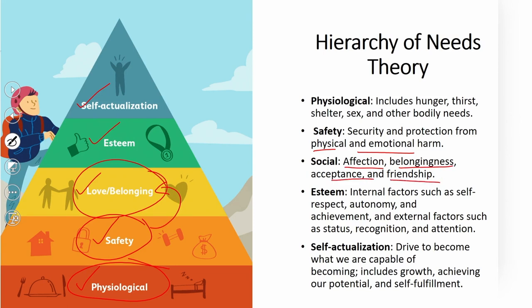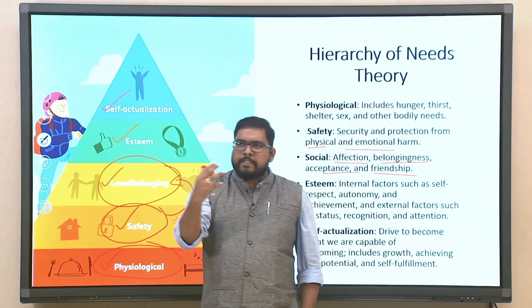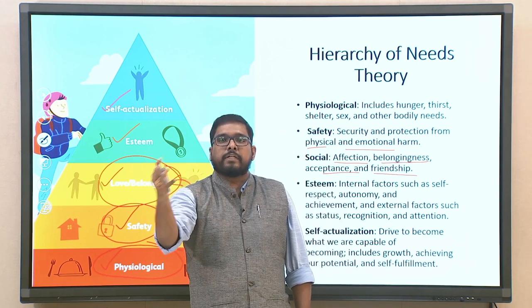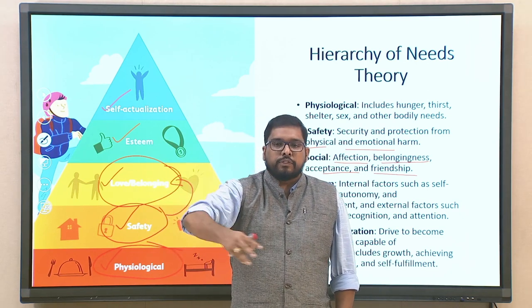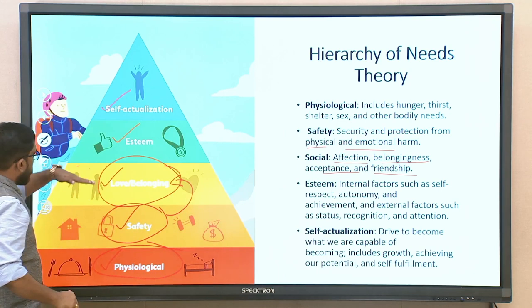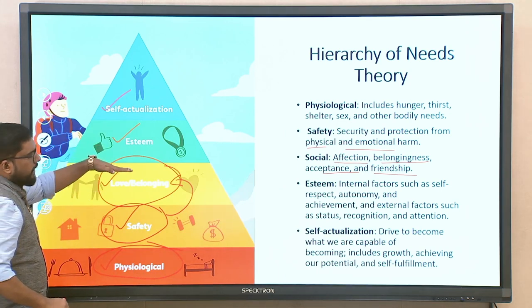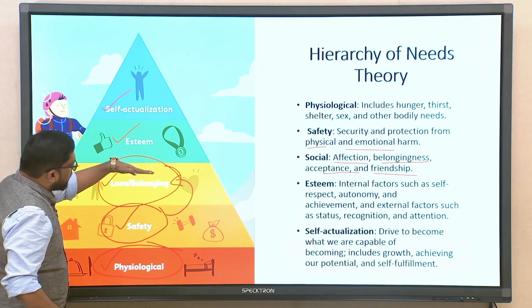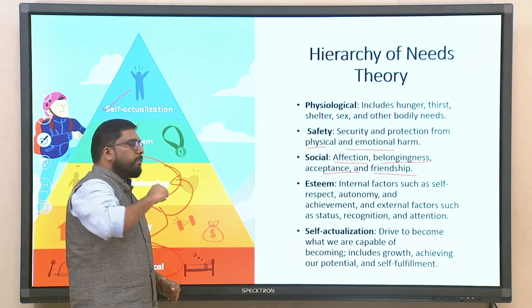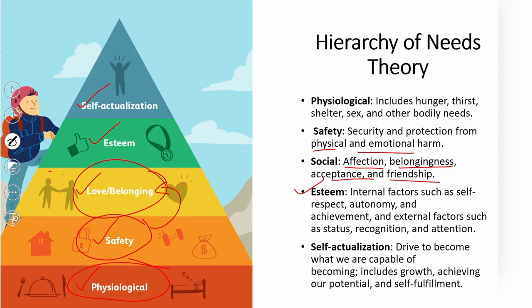Most people tend to reach and stagnate at the social needs level, striving for affection and belongingness — within the organization, the group, the team, the home, the society, or the community. There could be stagnancy at this particular point. If somebody is satisfied with affection, belongingness, and acceptance, they may move to the fourth level: esteem.